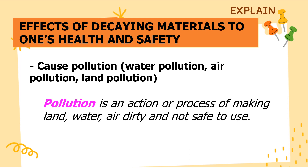For example, in water pollution, the water becomes contaminated and is not safe for drinking or for swimming, and no living things will live. In air pollution, the smoke or smell of decaying materials will pollute the air and can cause skin itchiness, infections, cancer, or other respiratory diseases. While with land pollution, the waste materials cause the land to serve as breeding places for flies, cockroaches, rats, and other pests. Those pests carry germs that can cause different diseases hazardous to our health and safety.